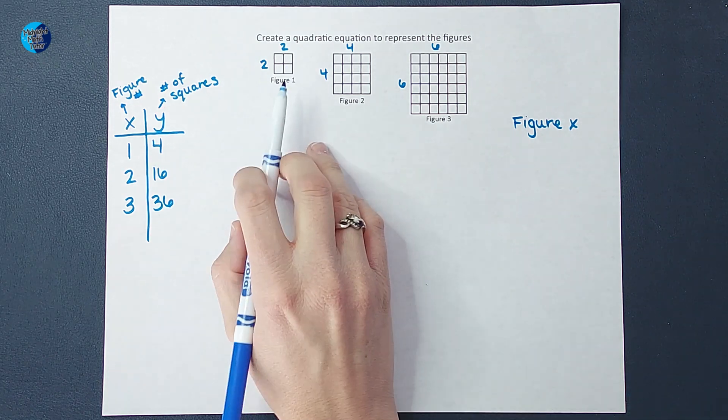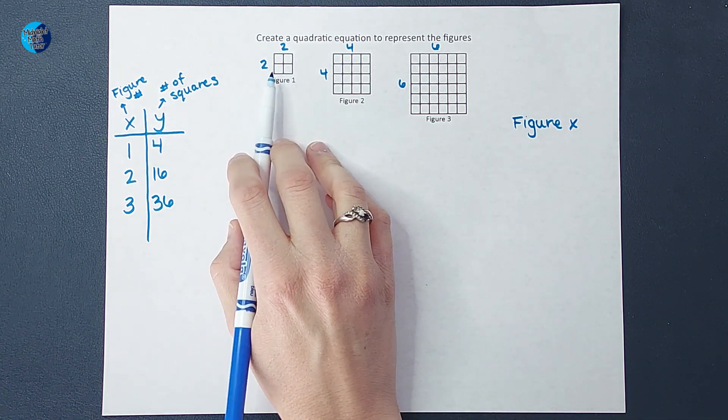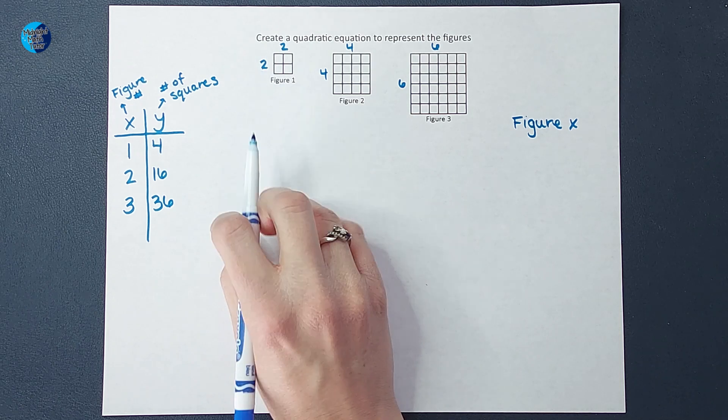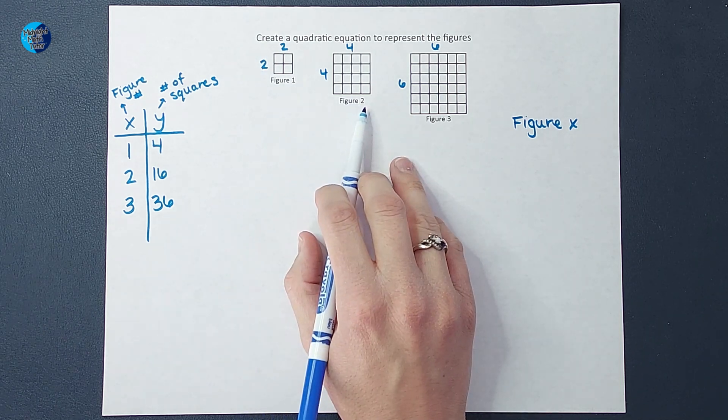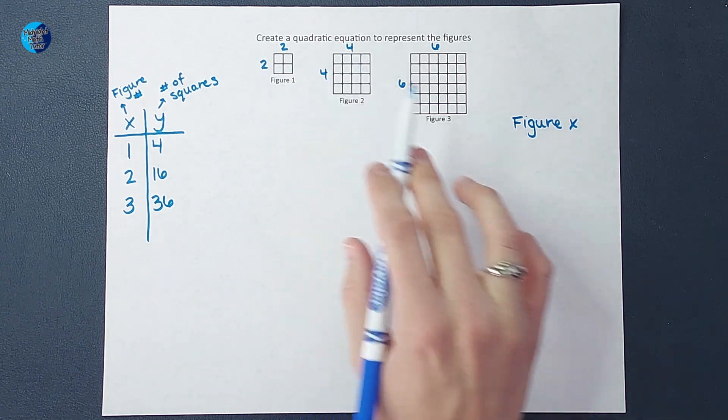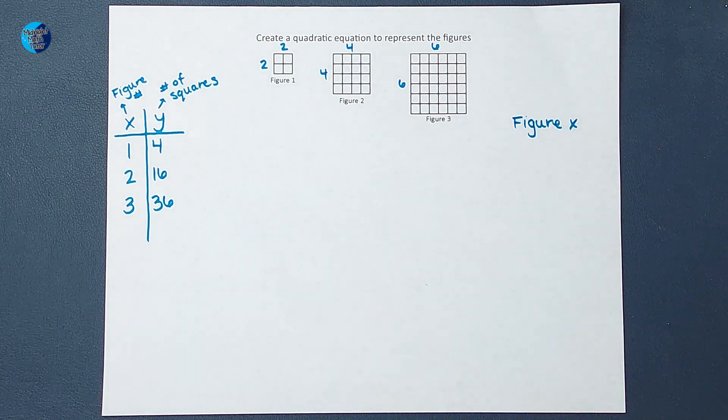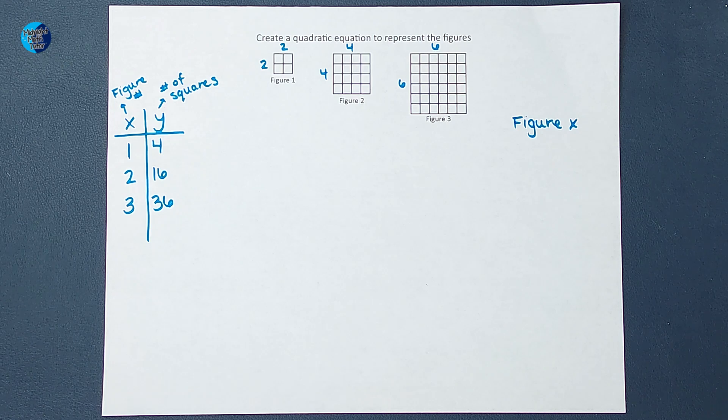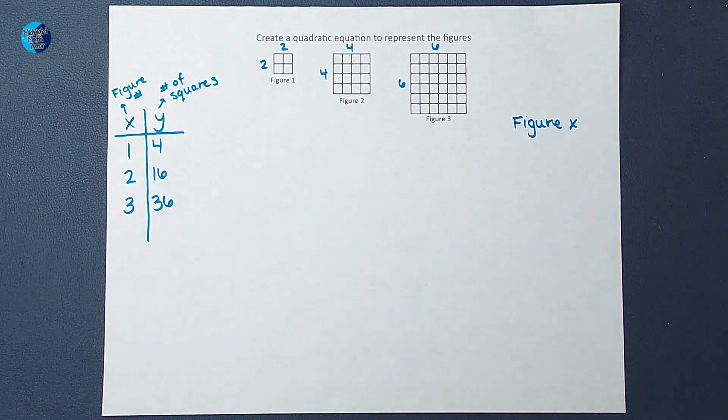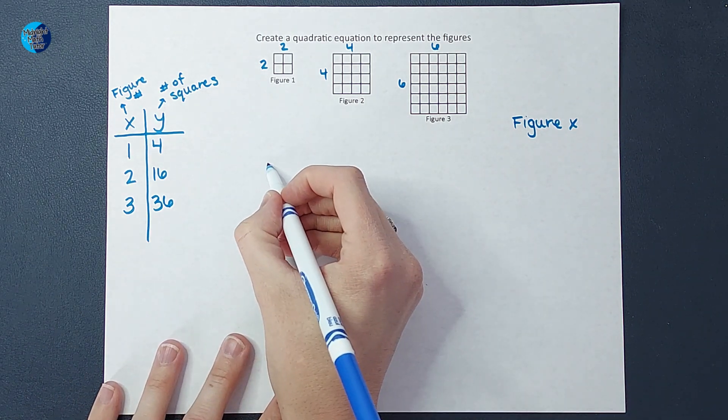So if you notice, for figure one the sides are 2 and 2, for figure two the sides are 4 and 4, for three they are 6 and 6. Do you notice how the figure number is related to the dimensions? It's double.